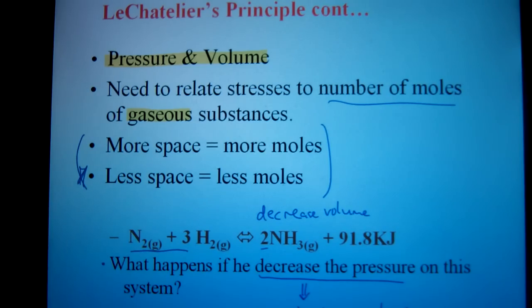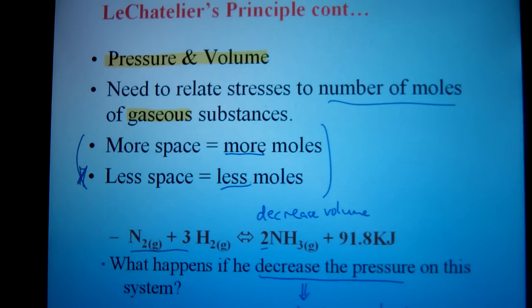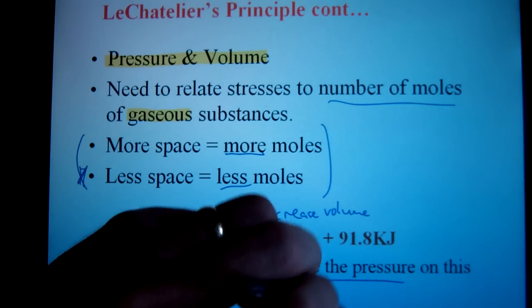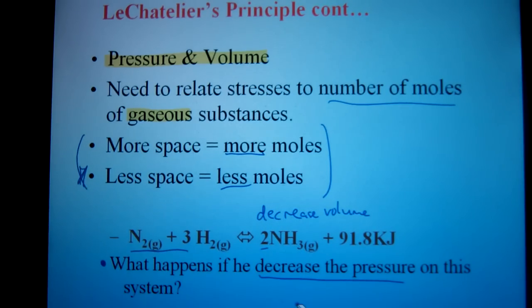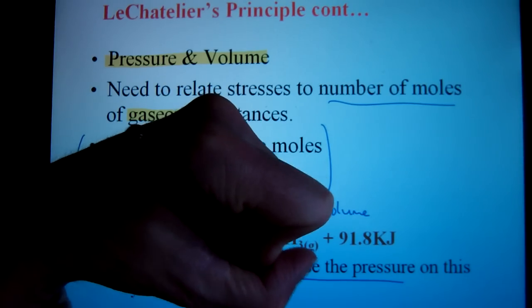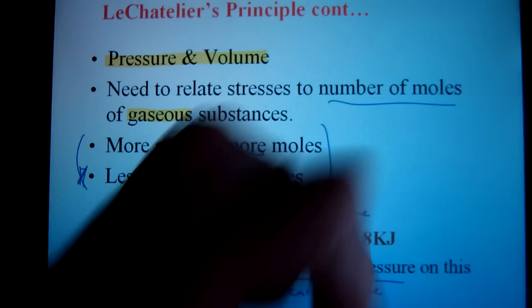Next stress that you're going to see is dealing with pressure and volume. Pressure and volume, you have to think a little bit more because you can't just do an instant shift. You have to relate it to the number of moles of gaseous products or reactants that you have. As an example, this question: What happens if we decrease the pressure on the system? I have a difficult time conceptualizing pressure. So what I do is translate it into volume. A decrease in pressure is the same as saying an increase in volume.